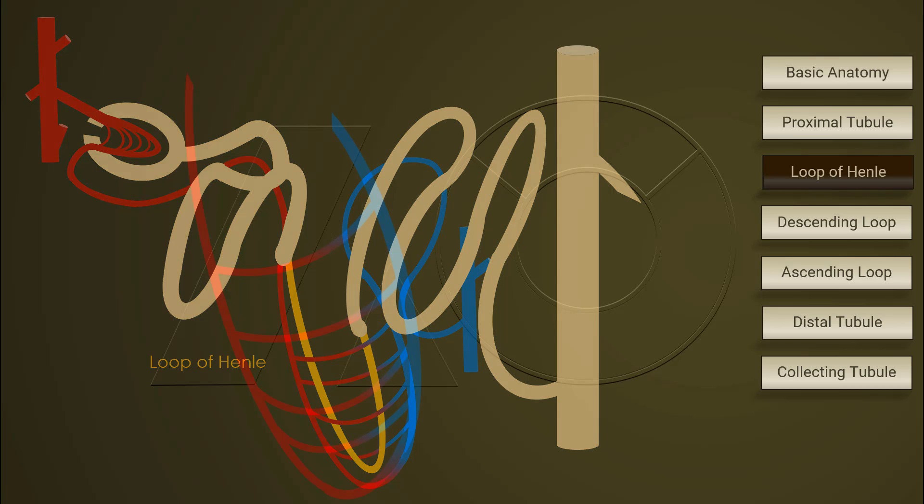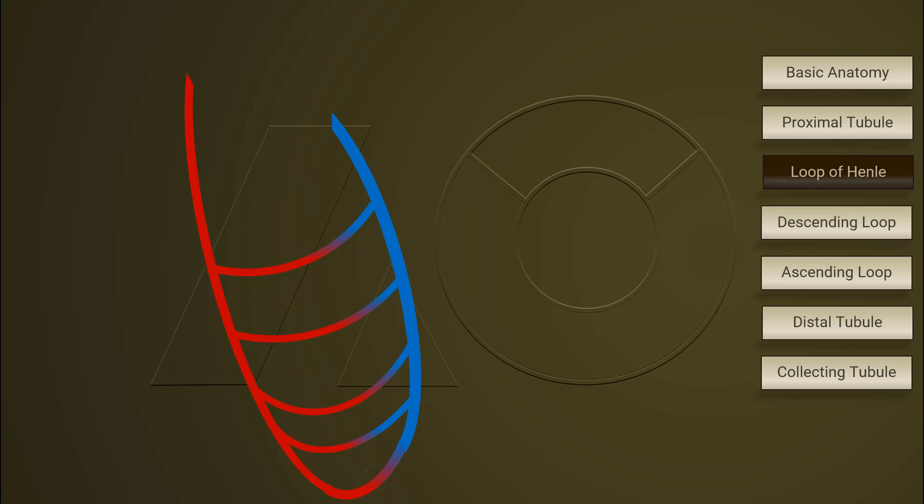When left the proximal convoluted tubule, the filtrated content is isotonic. As it passes through the descending loop of Henle, water is reabsorbed and concentration of salt contents increases up to three times.